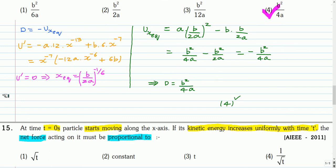This is the next question. At time t = 0, a particle starts moving along the x-axis. If its kinetic energy increases uniformly with time t, the net force acting on it must be proportional to?